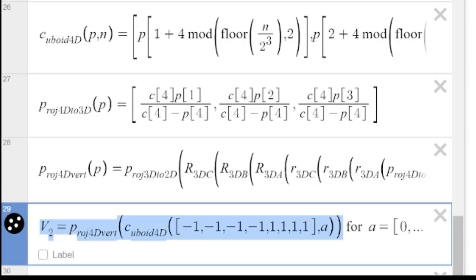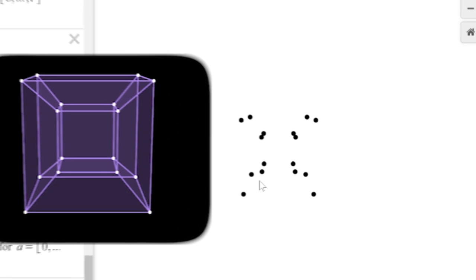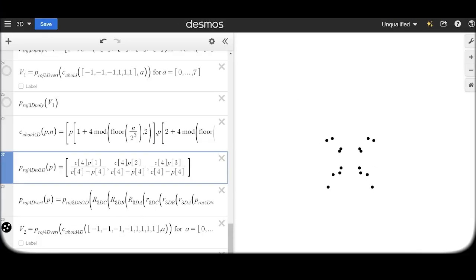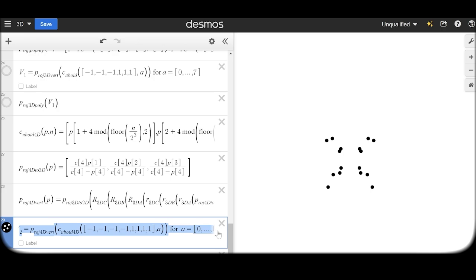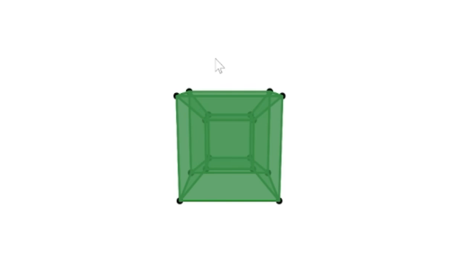Now when we copy that into Desmos and map it to each point in the cuboid, we get this, which looks very similar to our hypercube. And if you draw polygons to connect the vertices, then you get a hypercube.